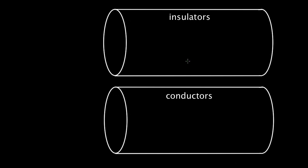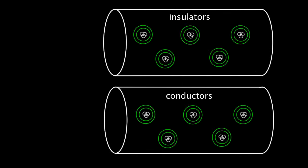Here I have two solid cylinders of either an insulating material or a conducting material. Before I talk about the differences, one similarity is that both insulators and conductors are composed of a huge number of atoms and molecules, and these atoms and molecules — whether insulator or conductor — are composed of a positively charged nucleus and a negatively charged swarm of electrons that surround that nucleus. Another similarity is that for both conductors and insulators, the positively charged nucleus cannot move.